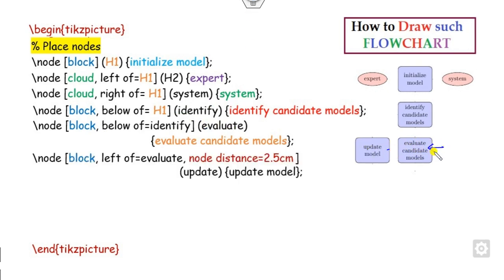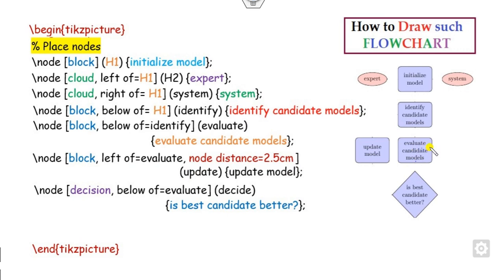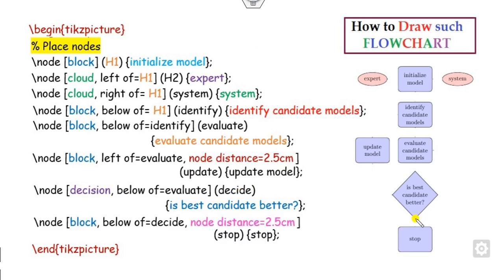Now you want to write the node on the left of this block — the label of this block is 'evaluate'. You can see 'left of evaluate', and the node distance from the boundary is 2.5 cm. Below the evaluate model is the decision diamond, written in the form of 'decision'. Whatever text you want to write goes here, and the label of this node is stored as 'decide'. Then, below the decide node with node distance 2.5, you place a rectangle using block. Once you have defined all these nodes, the node definition section is complete.